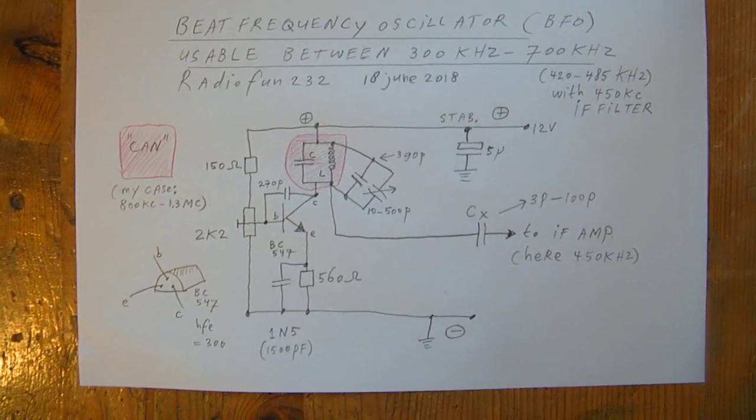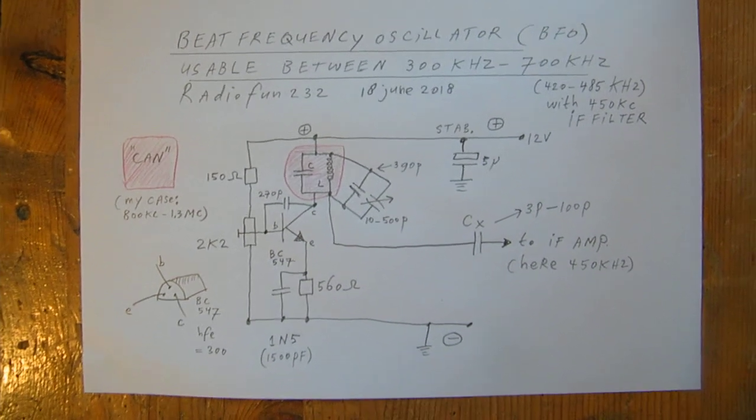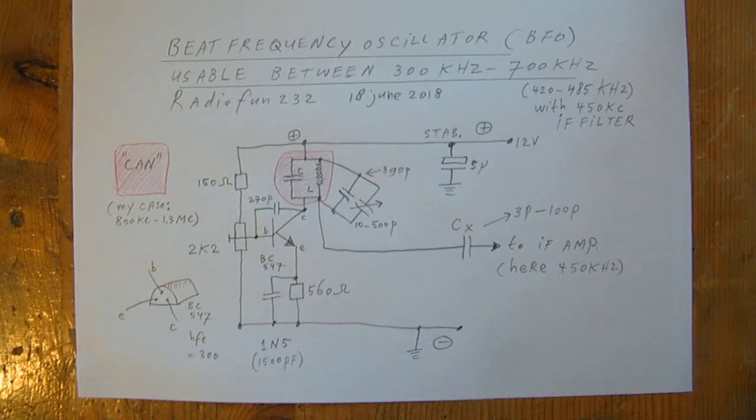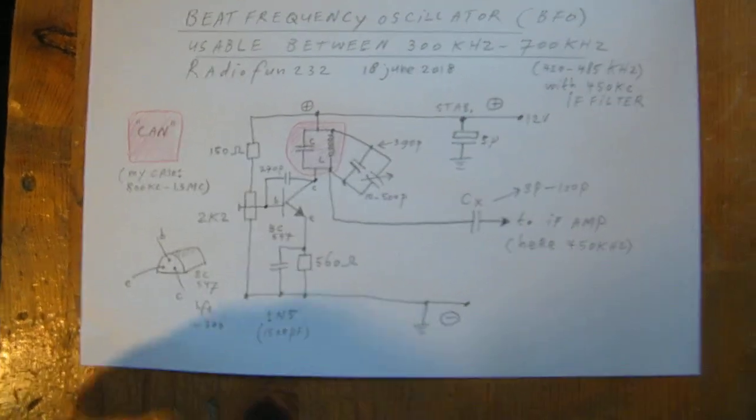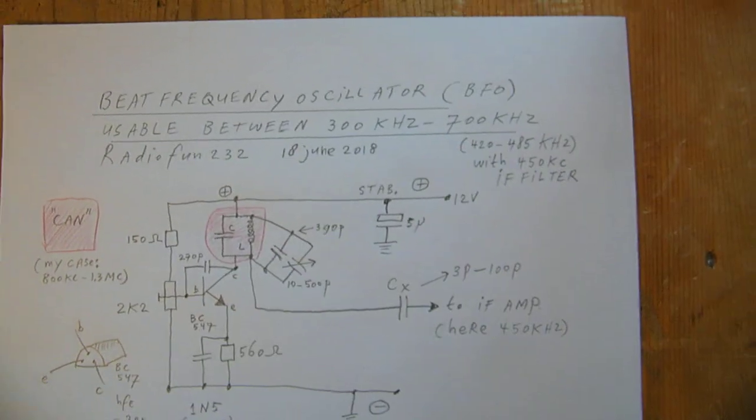In this video, a circuit for a beat frequency oscillator that works with a variable capacitor and has a quite big tuning range between 300 kilohertz and 700 kilohertz.